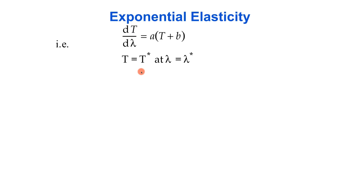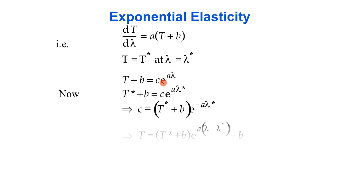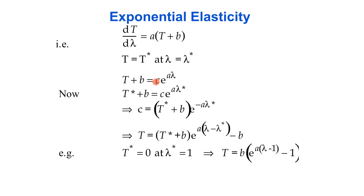We could use any known point on the stress-strain curve to integrate this relation. Integrating, we see that t plus b must be an exponential with exponent a, an unknown coefficient c, that we can solve for using our boundary condition. T star plus b therefore equals c times e to the a·lambda star, which we can rearrange to find c equals (t star plus b) times e to the minus a·lambda star. Plugging this back in, we get t equals (t star plus b) times e to the a(lambda minus lambda star). For the simplest case when t star is 0 and lambda star is 1, this reduces to t equals b times e to the a(lambda minus 1) minus 1. We can check that when lambda equals 1, t equals 0.